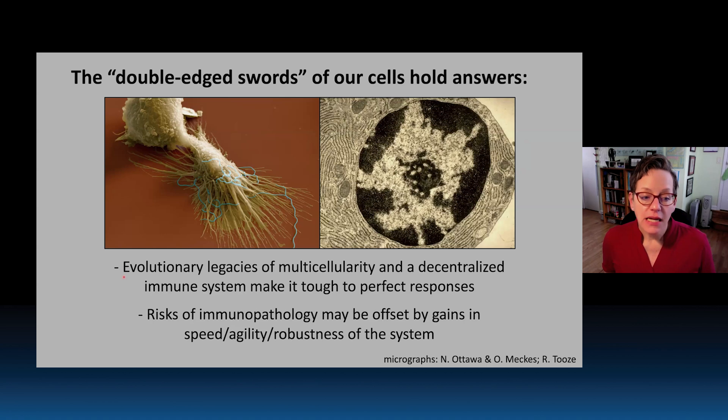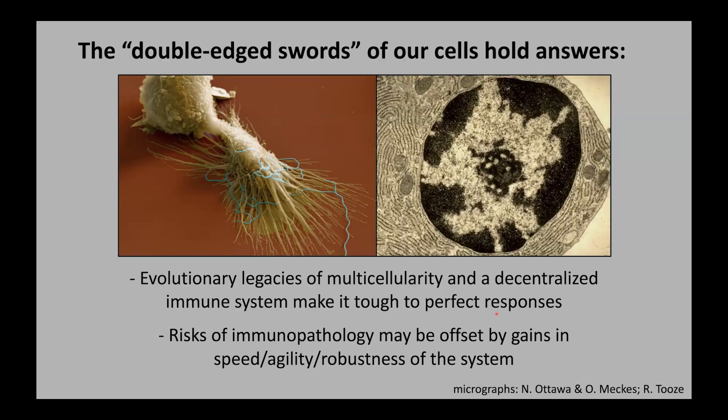In sum, evolutionary legacies of our multicellularity having arisen from unicellular organismal ancestors who acquired phagocytic capacity, and a decentralized immune system with no top-down control where the collective needs to respond to the challenge at hand — those together make it tough to perfect responses. That in itself can help explain the heterogeneity among individuals in the balancing acts they strike when infected. This raises lots of interesting questions, such as how risks of immunopathology may be offset by gains in the speed, agility, or robustness of the system. Thank you so much.